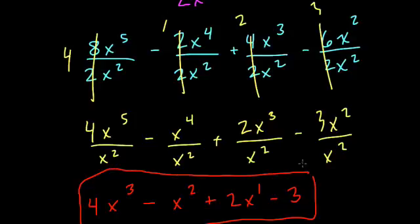So again, it's just a matter of regrouping, dividing the numbers, the coefficients. That's what we did here. And then if you're dividing with the same bases, which we are in each of these cases, you just subtract the exponents. All right, hope this helped.